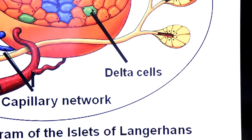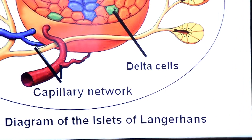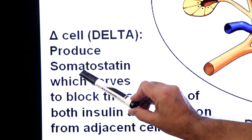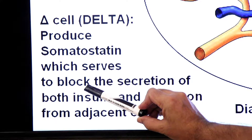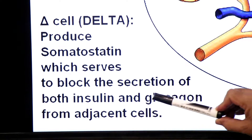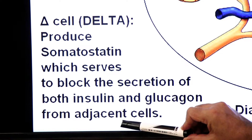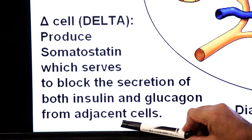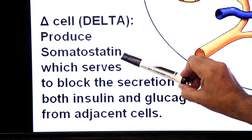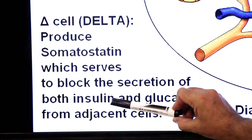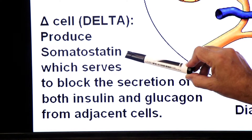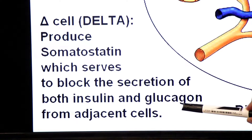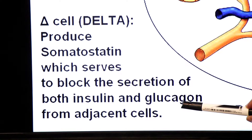Delta cells — now see what is the function of delta cells. Delta cells produce somatostatin hormone, which serves to block the secretion of both insulin and glucagon from adjacent cells. When the body does not need insulin, somatostatin acts as an inhibitor and shuts down insulin production. Similarly, if the body does not need glucagon, somatostatin inhibits glucagon production as well.